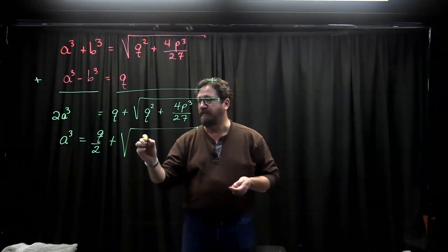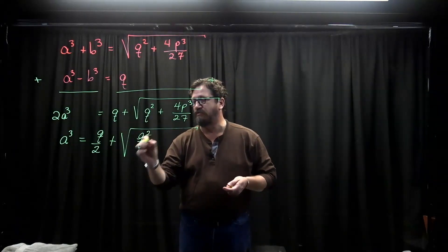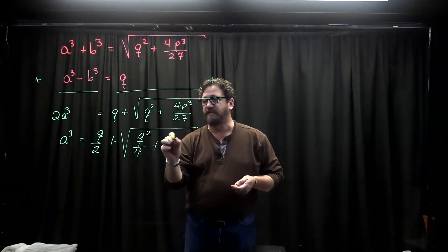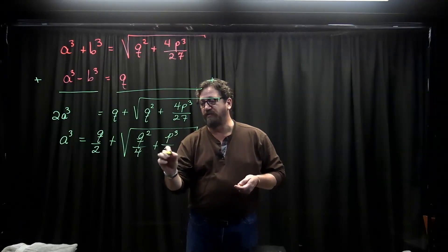So everything is going to be divided by 4, and I get q squared divided by 4 plus p cubed over 27.